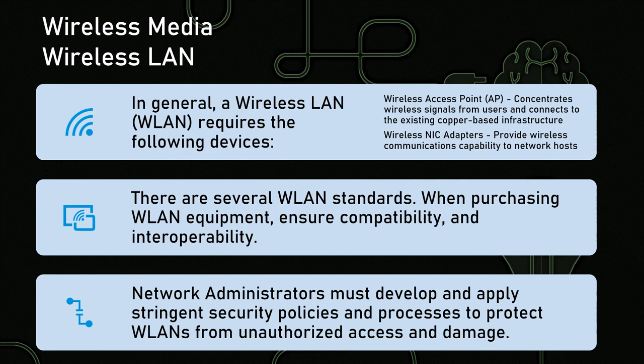A wireless LAN requires two primary devices: a wireless access point and a wireless NIC. The backbone receiving devices have to have a wireless access point — that's the endpoint of the physical network, transmitting wirelessly to send and receive. Your host device has to have a wireless NIC to generate the signals necessary for wireless communication. When purchasing equipment, make sure you've done your planning to ensure compatibility and interoperability. Administrators also have to develop and apply very stringent security policies to protect WLANs from unauthorized access and damage. We have to make sure the wireless frequency isn't going too far out of the physical range of the buildings so that somebody couldn't camp just outside and try to intercept traffic.